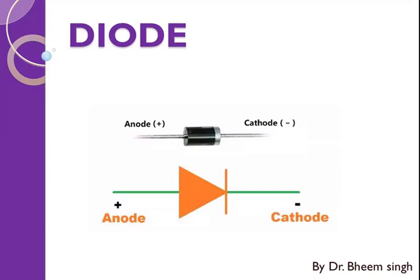Hello dear students, good morning. Today we are going to study about the diode. Diode is the electronic device which has an anode and cathode. Diode has various applications in electronics.